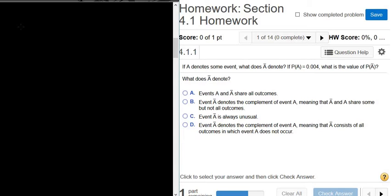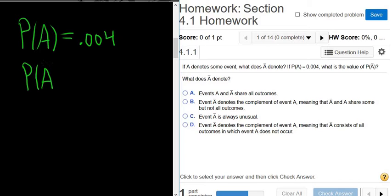So we're told that P of A is equal to 0.004, and we want the value of P of A complement.